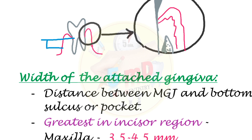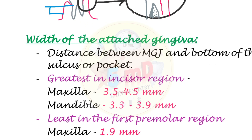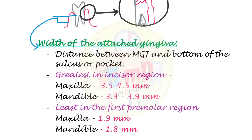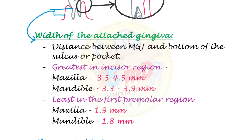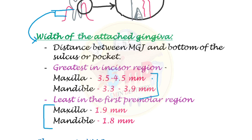The width of attached gingiva is greatest in the incisor region and least in the first premolar region. In the maxilla, the incisor region measures about 3.5 to 4.5 mm, while in the mandible it is about 3.3 to 3.9 mm. In the first premolar region, the width is 1.9 mm in the maxillary region and 1.8 mm in the mandibular region.